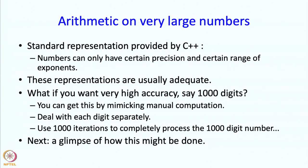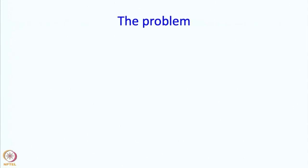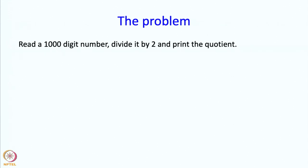Now this turns out to be somewhat involved. But what we are going to do in this segment is give you a glimpse — a very brief introduction to how this is possibly done. It is going to be a very simplified example, but it will give you some idea. The specific problem we are going to consider is: you are asked to read a thousand-digit number, divide by 2, and print the quotient.